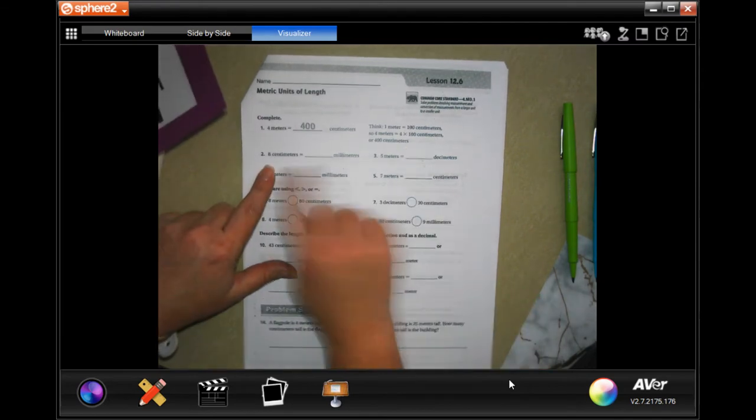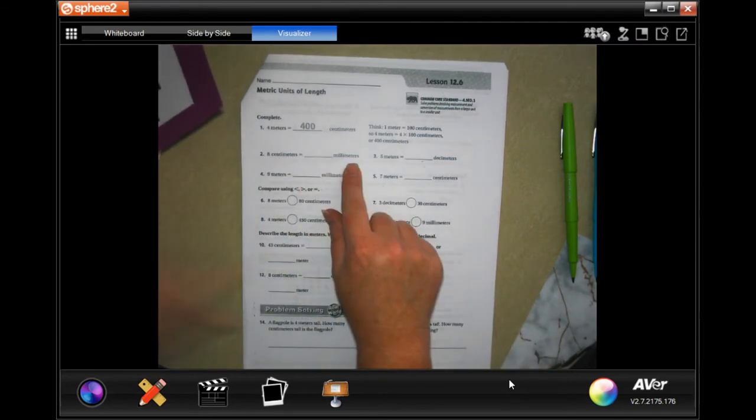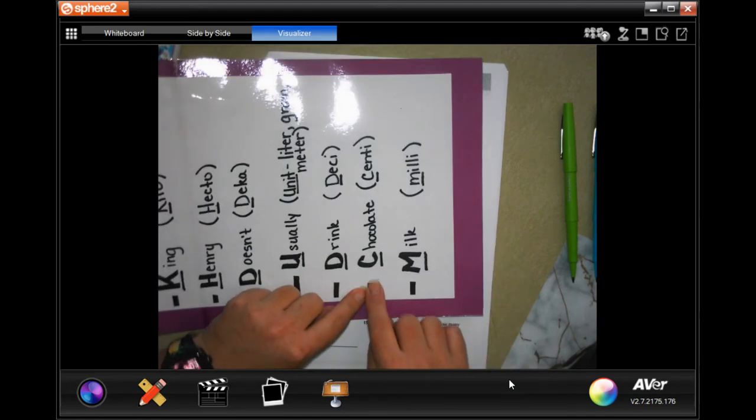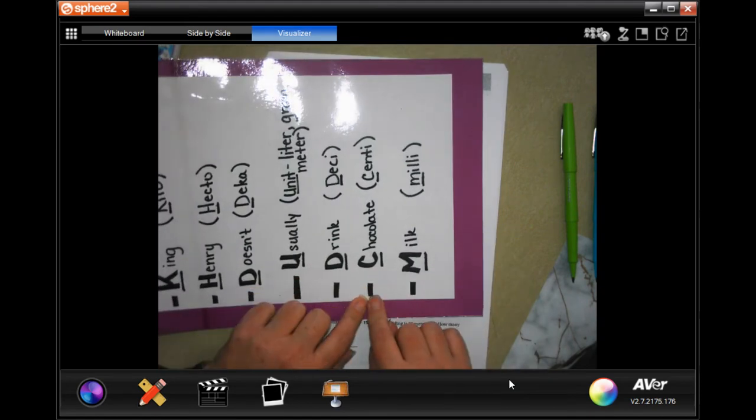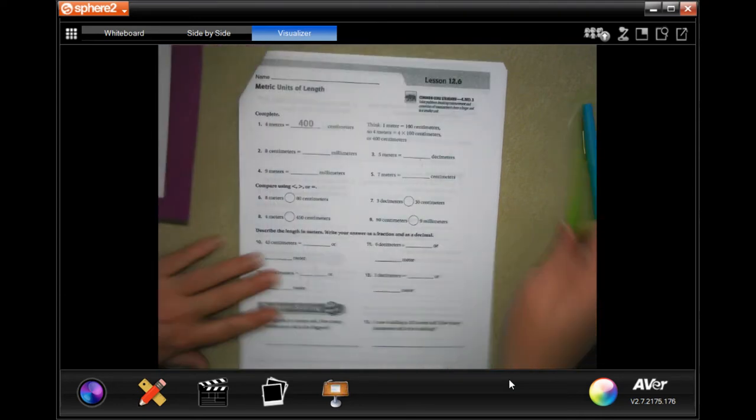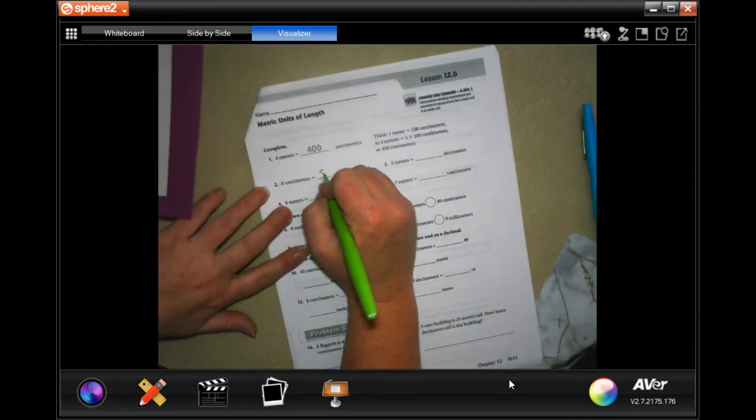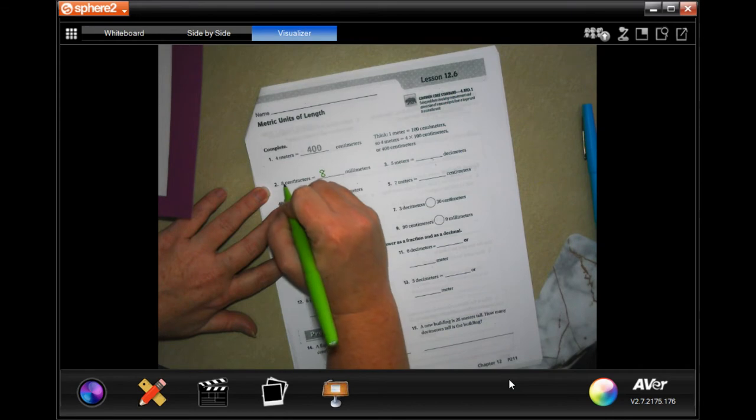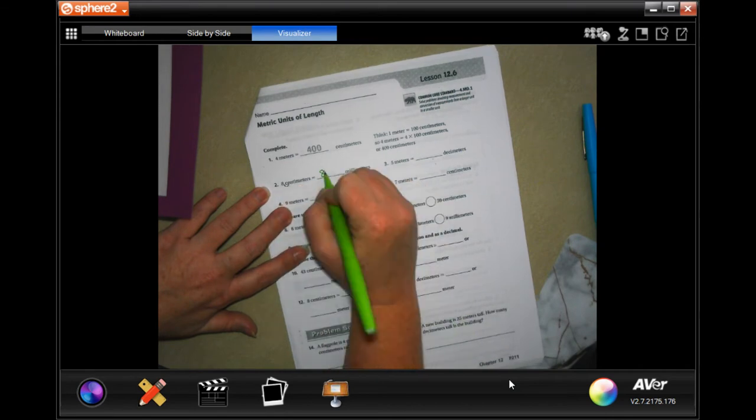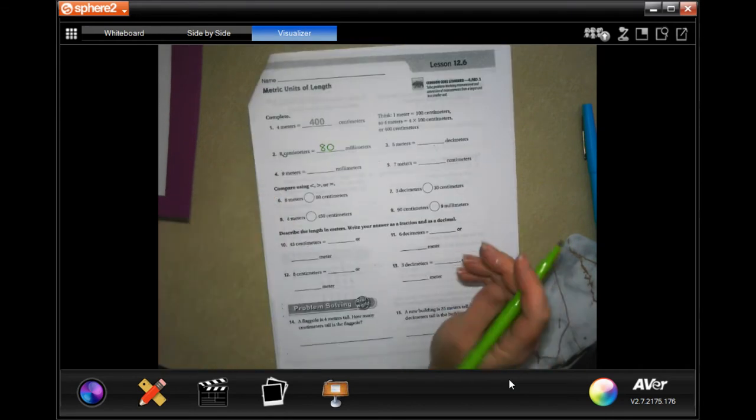So we're going to number two from eight centimeters to millimeters. So centi to milli, we move our decimal one time to the right, which means I would move our decimal which would normally be here and we would move it one time giving us 80.